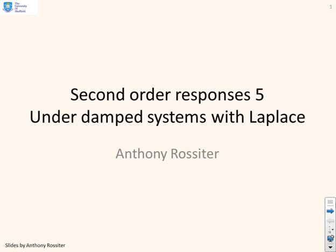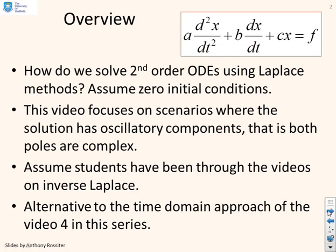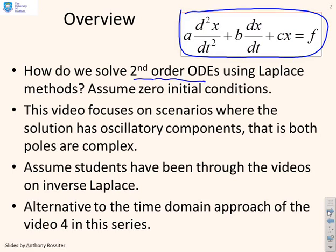This lecture looks at second-order responses of underdamped systems using Laplace methods. We're going to take second-order systems with a model of the form: a d²x/dt² + b dx/dt + cx = f, where f is a constant. We want to know how to solve these ODEs using Laplace methods. We're going to assume zero initial conditions — not because we have to, but because we want to focus on the concepts.